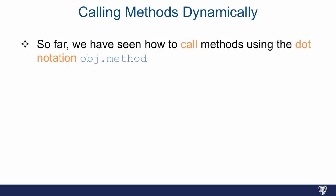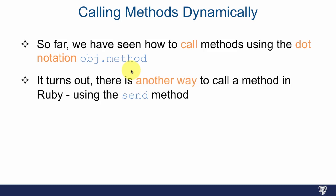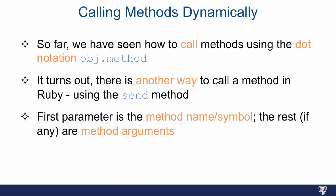So far we have seen that you could call methods in Ruby with dot notation, so for example object.method. But you could also call it using a send method, and the first parameter is a method name or a symbol, so either a string or a symbol, and the rest, if any, are method arguments. And why is it called send? Think of it as sending a message to an object.